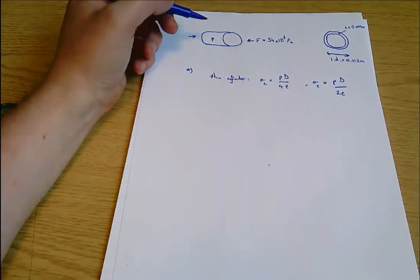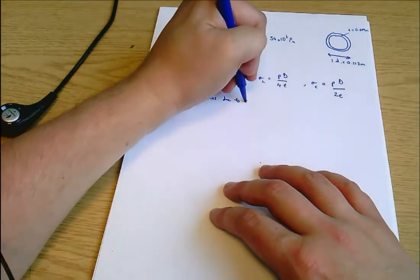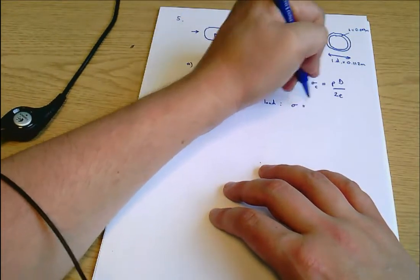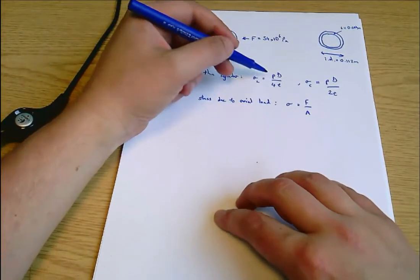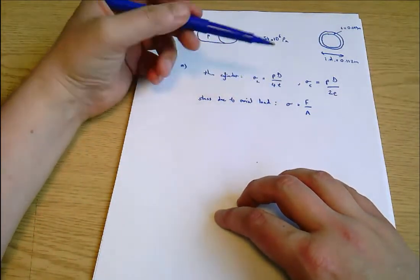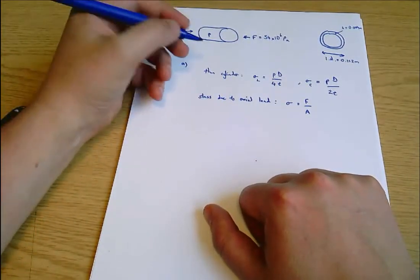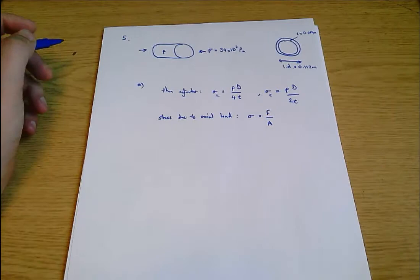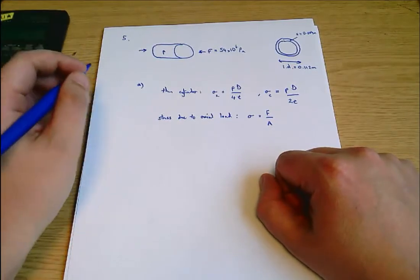Then we've got stress due to axial load which is going to be sigma equals force over area. Note that the stresses due to the internal pressure are going to be tensile, whereas the stress due to the axial load is compressive. Let's put some numbers into this. I got interrupted. Resuming.